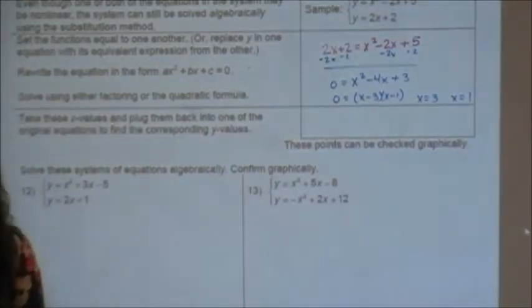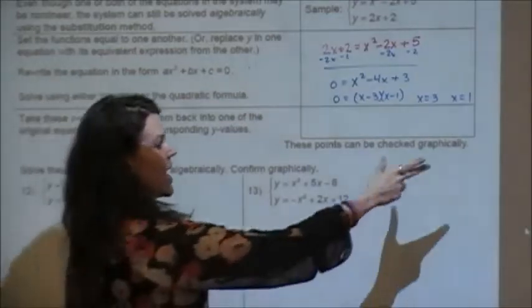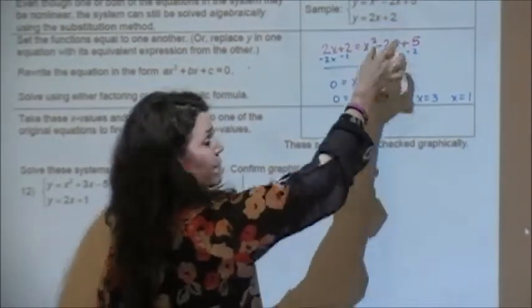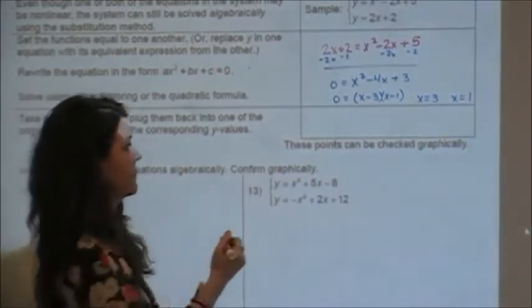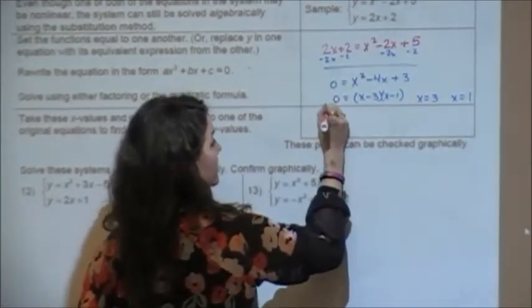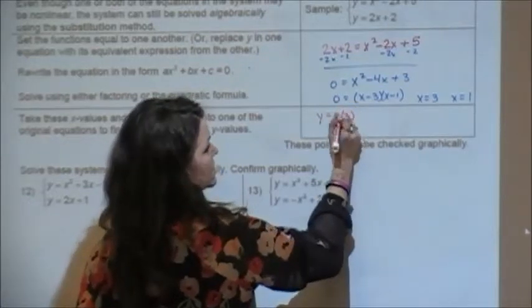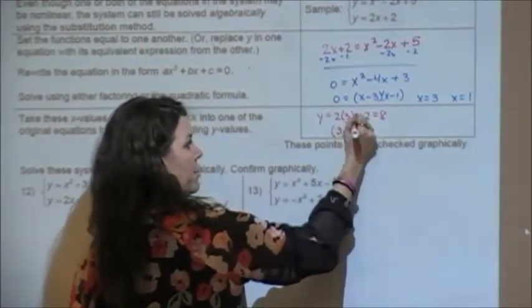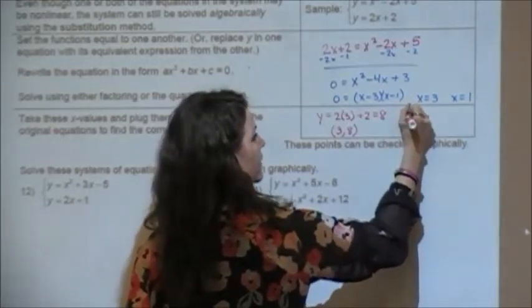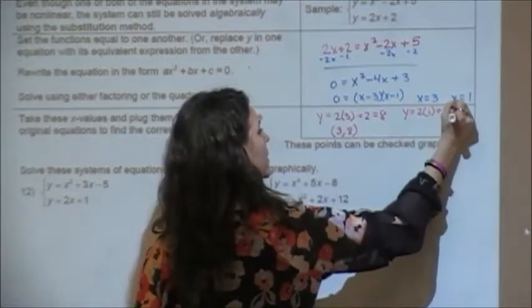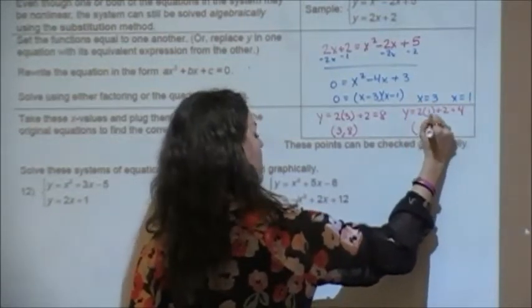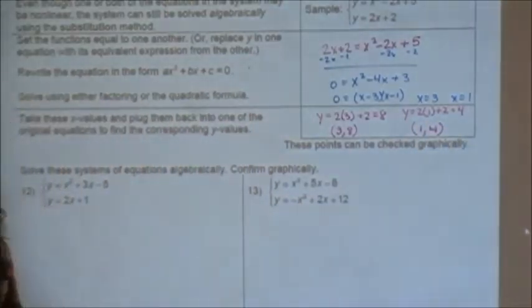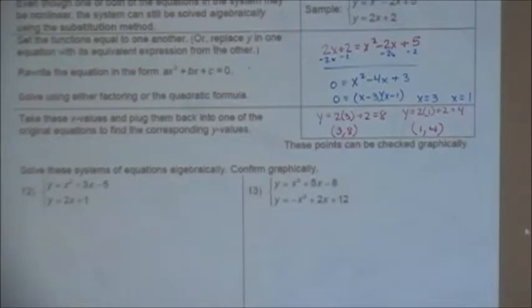Those are my two x values. Remember I need an ordered pair, so I'm going to take my x values and plug them back in to find the y values that go with them. I'm going to use the bottom equation because it's easier, so it's going to be 2 times 3 plus 2, so that's 8. So I have the ordered pair 3, 8 and the ordered pair 1, 4. Everybody okay? See, it's not as bad if you don't have to use a quadratic formula. Try number 12. I'm going to give you a minute or two to try number 12 and then I'm going to give you an answer to see where everybody gets it.